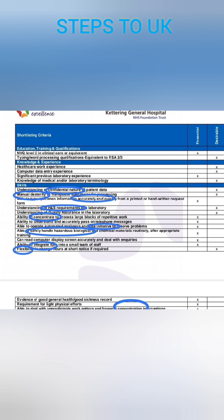The first skill is understanding the confidential nature of patient data, which means we can add the skill of confidentiality — saying we will maintain confidentiality. The next one is manual dexterity, and then accuracy. Another requirement is understanding health and safety requirements in the laboratory, meaning knowledge of health and safety. There is also the ability to concentrate for large blocks of repetitive work — we can say we are focused and have full ability to concentrate. Other skills include initiative, knowledge about hazards, how to handle hazardous biological and chemical materials, and integrity and flexibility. These are all skills we can add to our supporting documents.